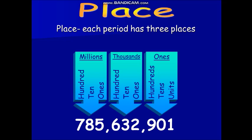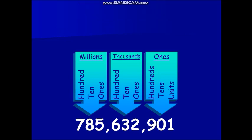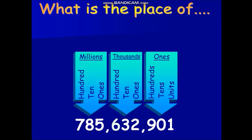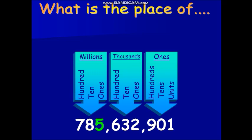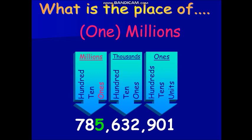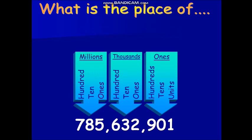Here is an example. Let's find the place value of the number 6. Let's just combine 'hundred' and then the period 'thousands.' So the correct place value of 6 is hundred thousands. Your turn. What is the place value of 5? One million, or millions, is correct. Take note that there is no need to mention the word 'one' for place values. Let's try another one. What is the place value of 9? Hundreds is correct.